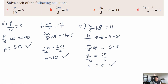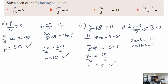Question d: (2x plus 3) over 7 equals 3. The 2x plus 3 are on the same level so multiply both sides by 7 first, giving 2x plus 3 equals 21. Subtract 3 from both sides: 2x equals 18. Divide both sides by 2, giving x equals 9. Give yourself a tick if you got that one correct.